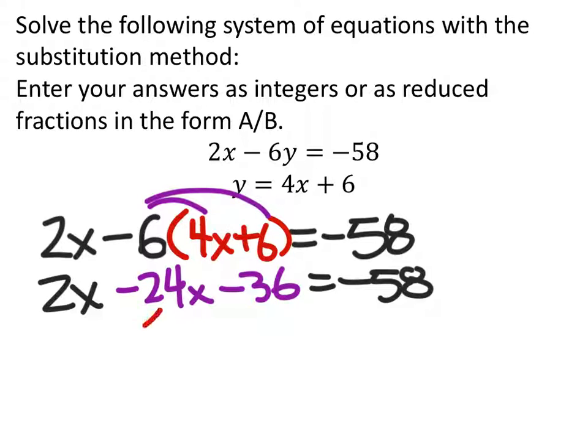From here, we would combine like terms. So 2x minus 24x is negative 22x, still minus 36 equals negative 58.